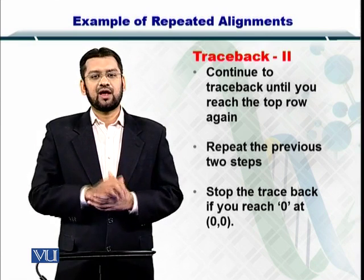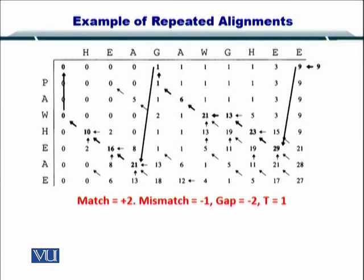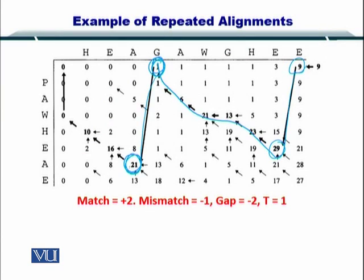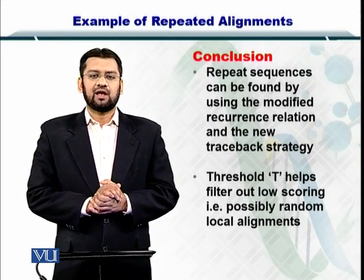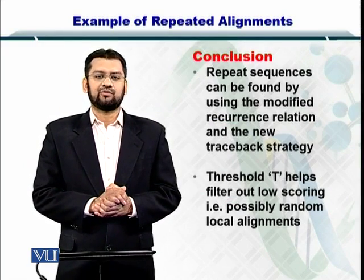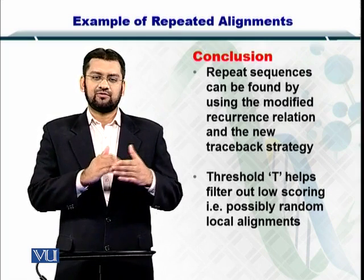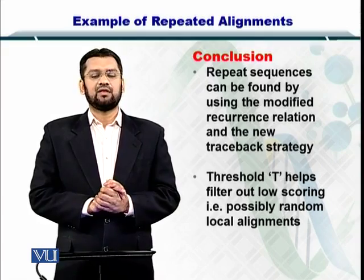In this way we can complete the traceback and extract the repeated alignments. We started from here, jumped to 29, continued the traceback until we reached 1, then jumped to 21, and kept moving until we reached 0 in the first row and first column. In conclusion, repeated alignments can be found by using a modified traceback strategy and a threshold t which filters out anything below that threshold.